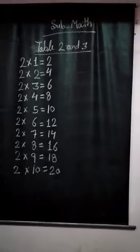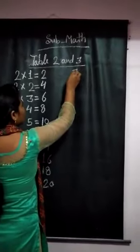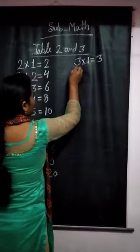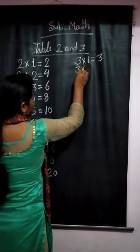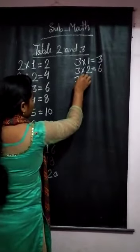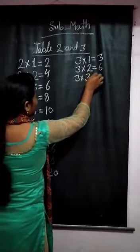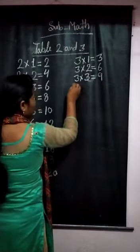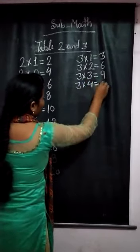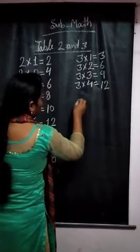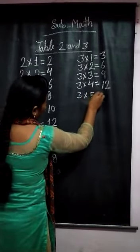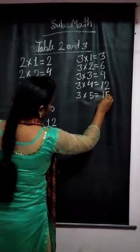The table of 3. 3 times 1 is 3. 3 times 2 is 6. 3 times 3 is 9. 3 times 4 is 12. 3 times 5 is 15.